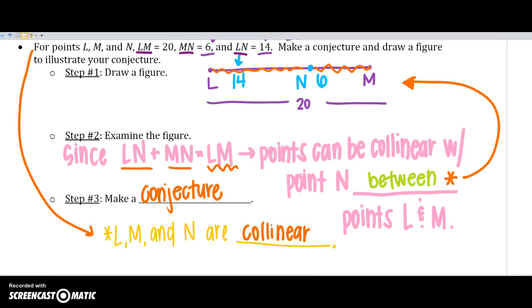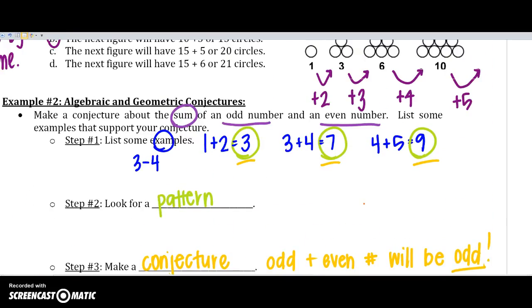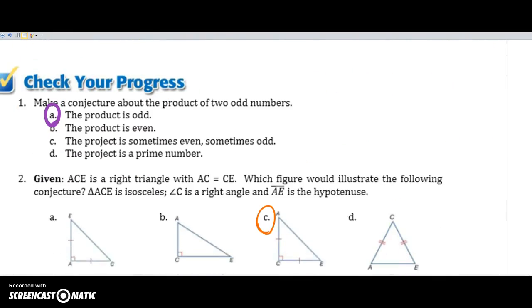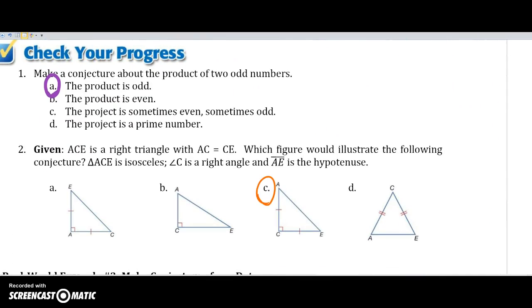If they add together to equal 20, or the whole length, they could be collinear. And somebody might prove me wrong with a counterexample, but that's kind of what I got from it. Again, geometric conjectures may look very different than algebra. All right, here are your next two checkpoints. See if you get the same answers.